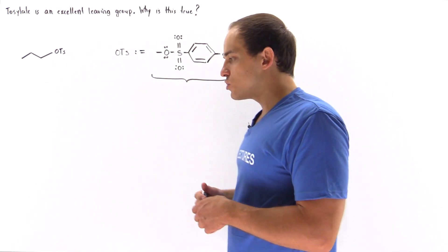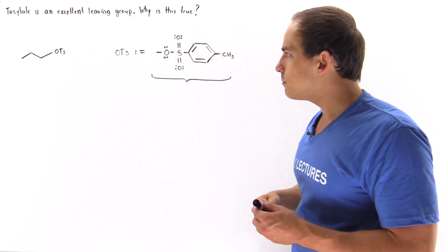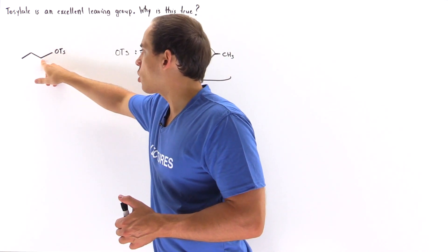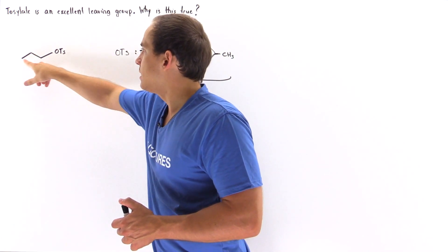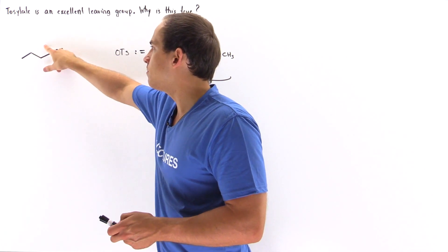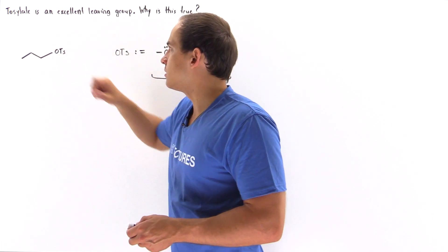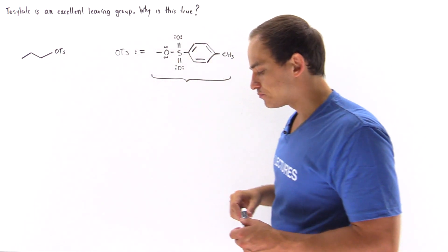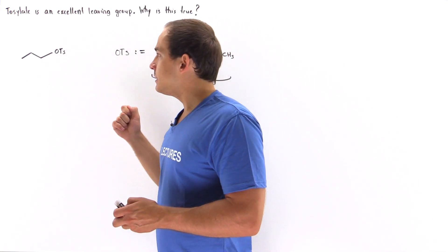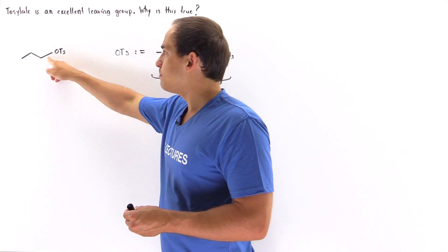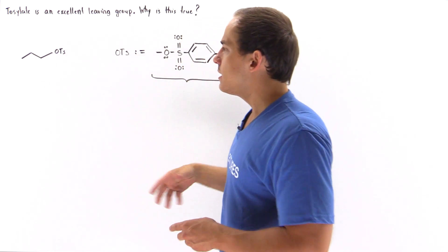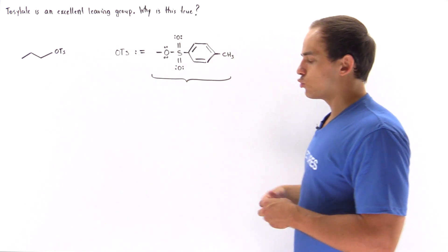Suppose we have a three-carbon chain hydrocarbon with the tosylate group attached on the third carbon. This group is an excellent leaving group, meaning it can detach or be kicked off via the SN2 reaction.